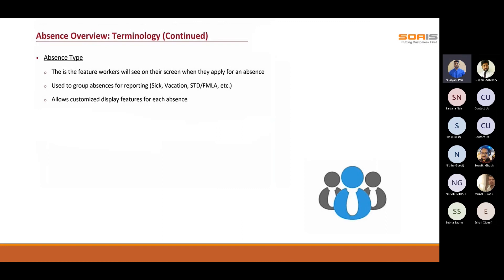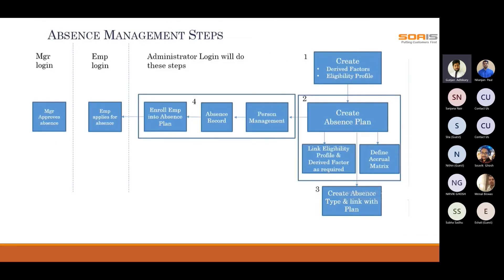Gunjan now takes over to provide further clarification. The building blocks show the stages by which absences and leaves are generated, calculated, and passed to payroll for final calculation. First, we create the derived factor and eligibility profile for an employee or set of employees as per the company's absence policy, since policies differ across companies.